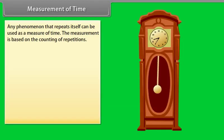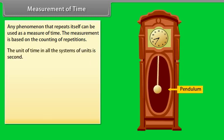Measurement of time. Any phenomenon that repeats itself can be used as a measure of time. The measurement is based on the counting of repetitions. The unit of time in all the system of units is second. Some techniques to measure time interval are given as: